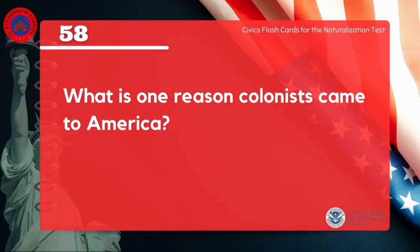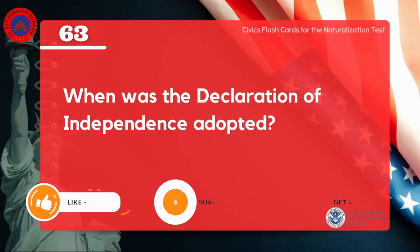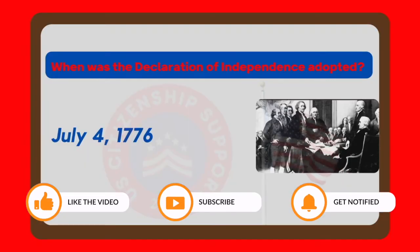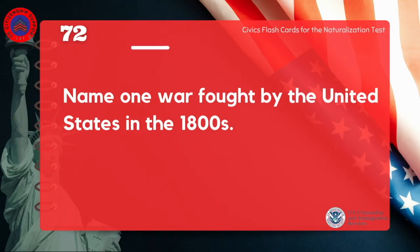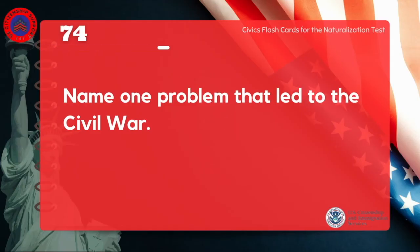What is one reason colonists came to America? July 4, 1776. Name one war fought by the United States in the 1800s. Civil War. Name one problem that led to the Civil War. Slavery.